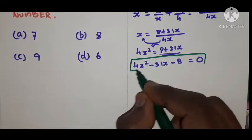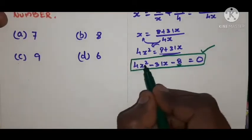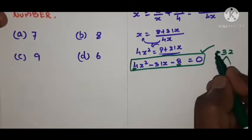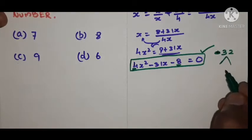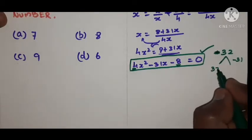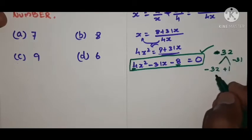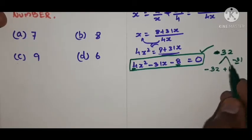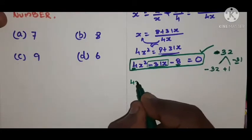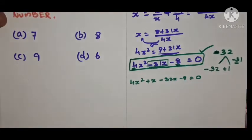We need to factorize this. Look at the constant term 8 and the highest power coefficient 4. So 4 × 8 = 32, meaning minus 32. We need two numbers that multiply to give −32 and add to give −31. Those numbers are −32 and +1. So we split −31x as +x − 32x: giving 4x² + x − 32x − 8 = 0.